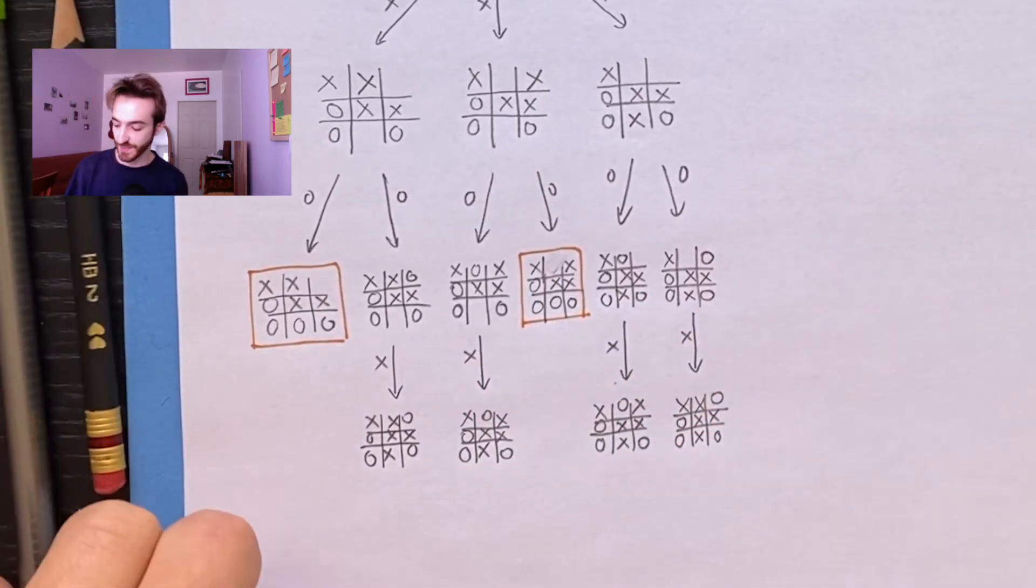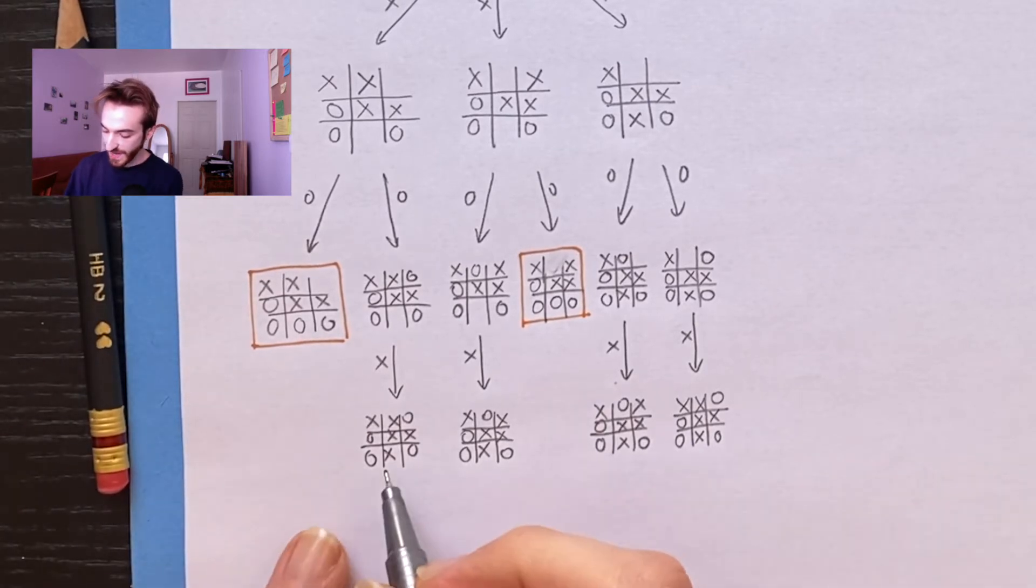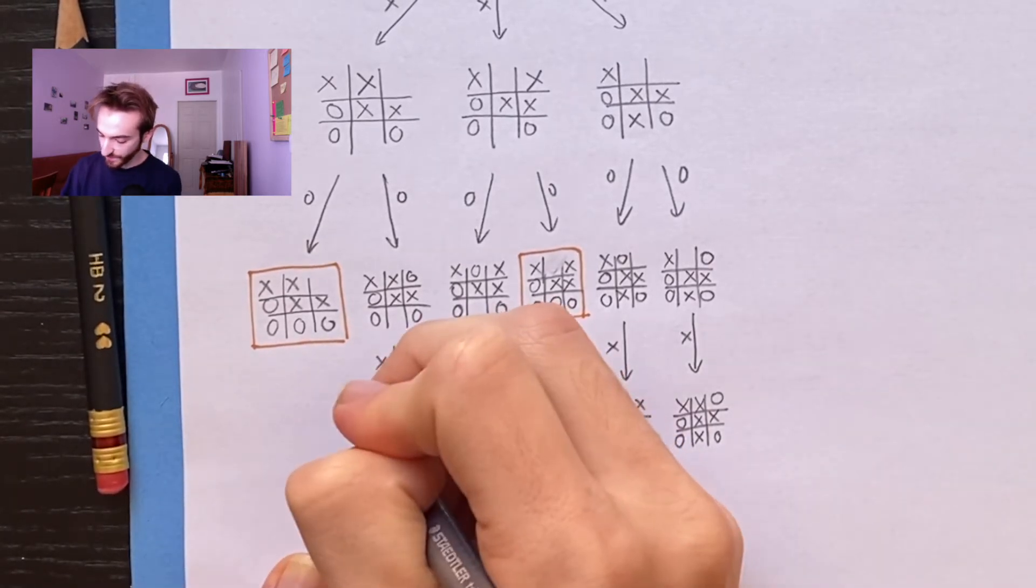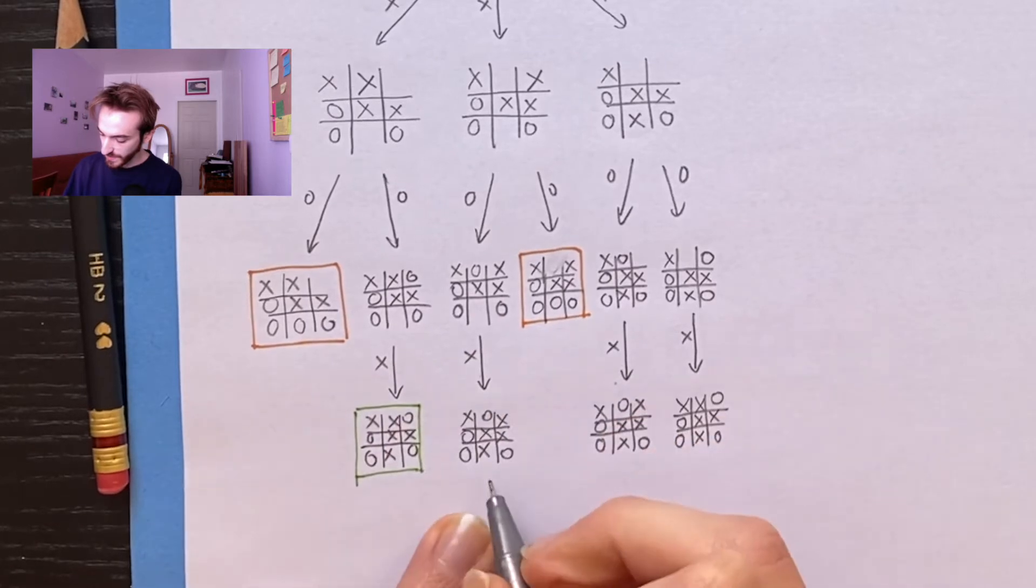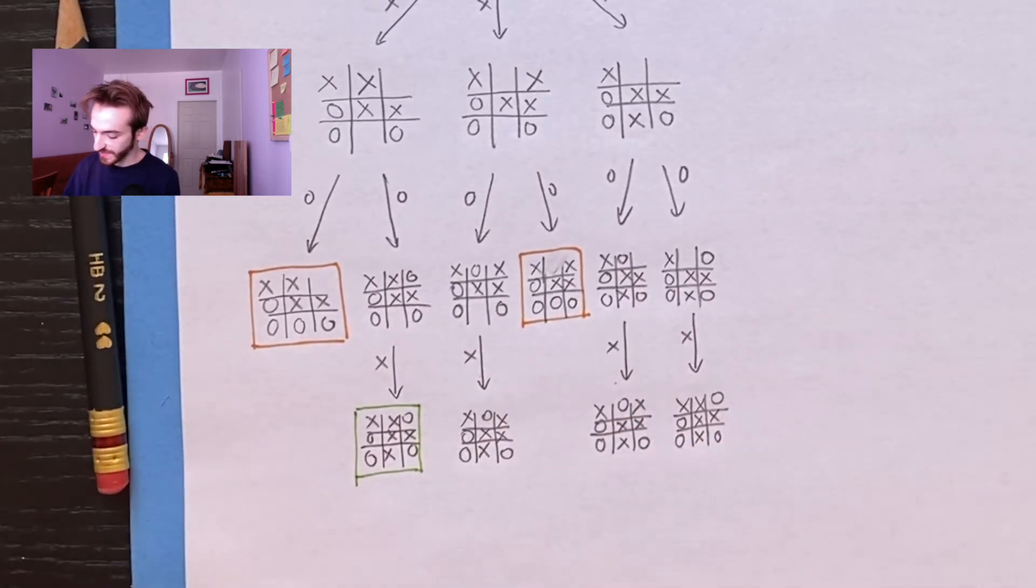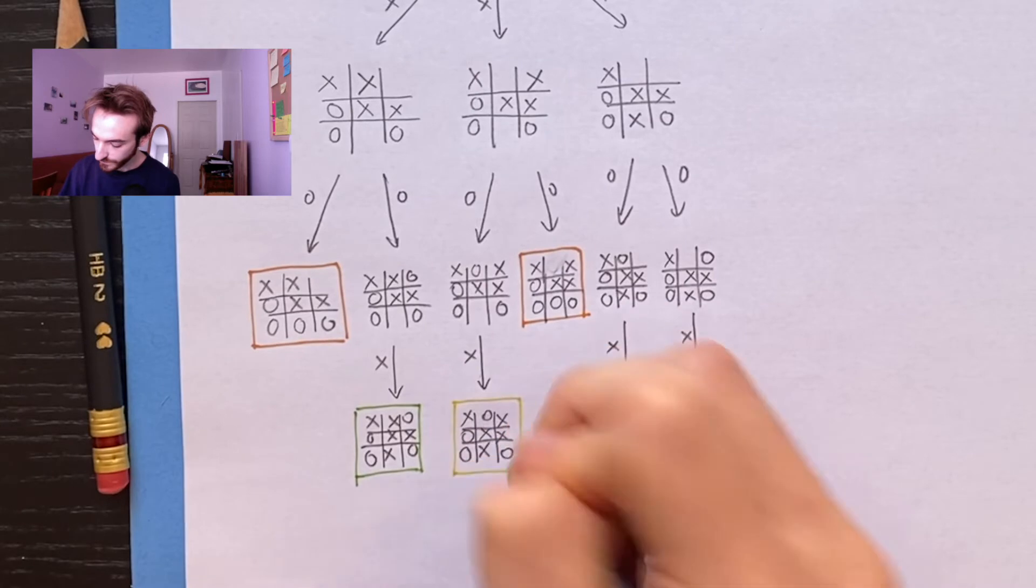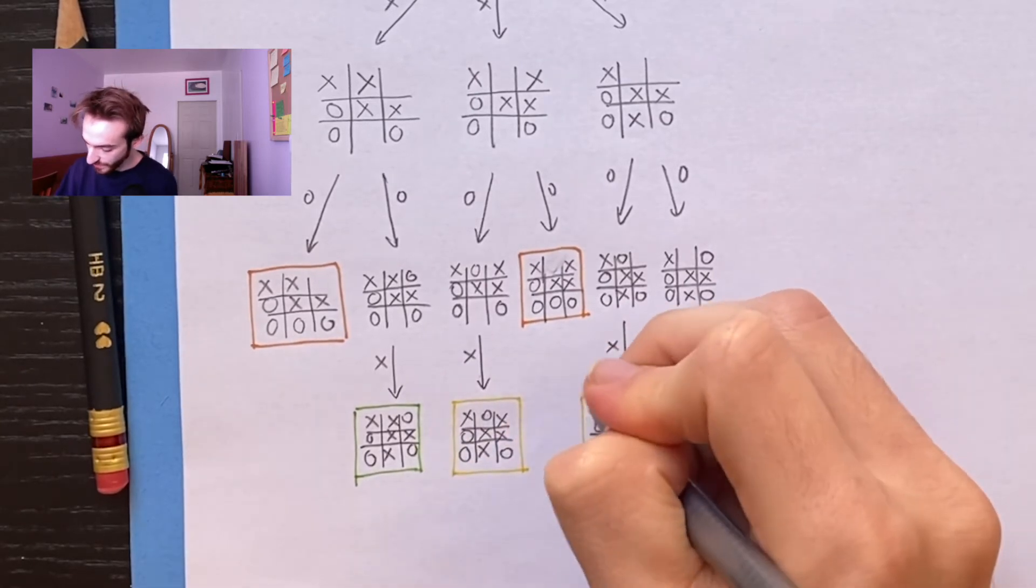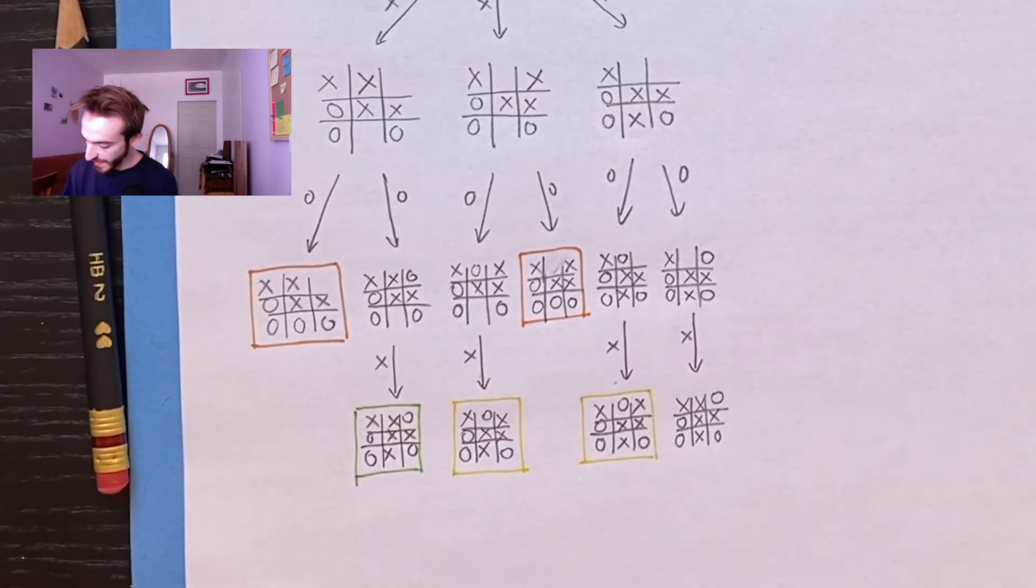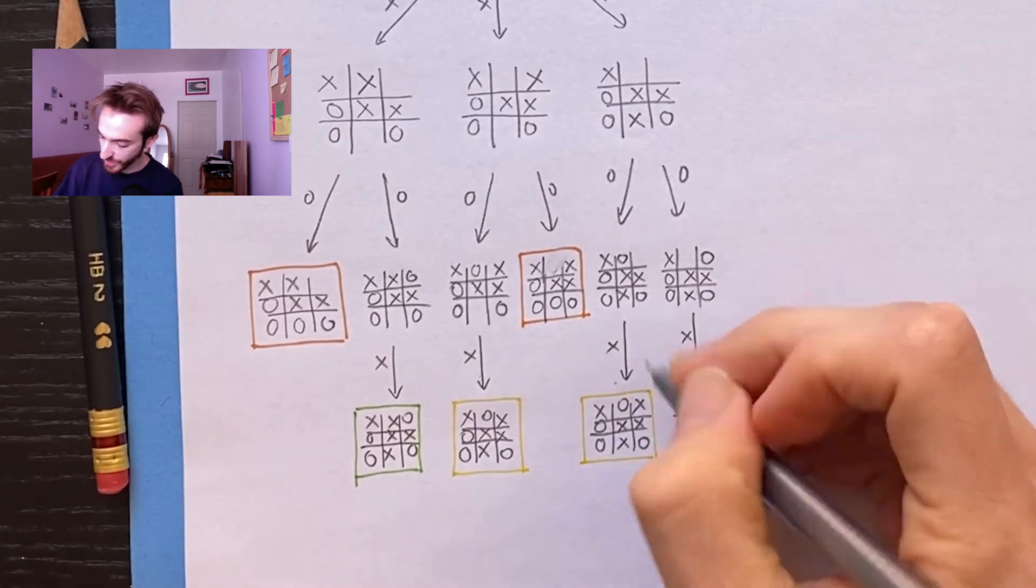Okay, so how did all of these games go? In this game X won, I'm going to color that green for X winning. Here, it was a tie, so I'm going to make it yellow if the game ended in a draw. Here, another draw. And here, X won again, so that's going to be green for X winning.